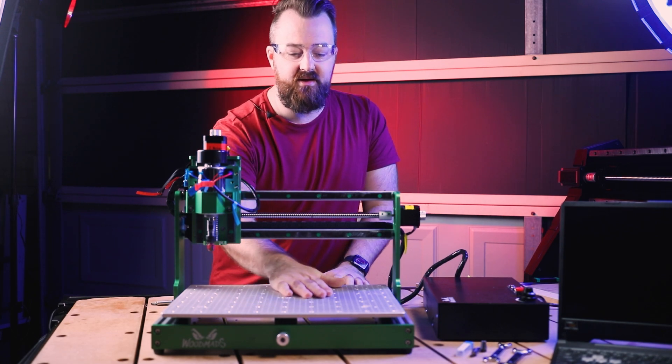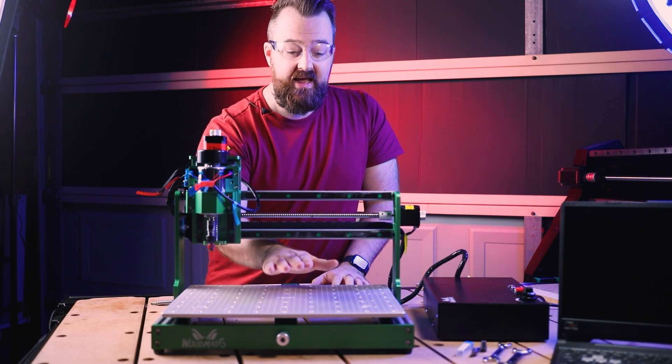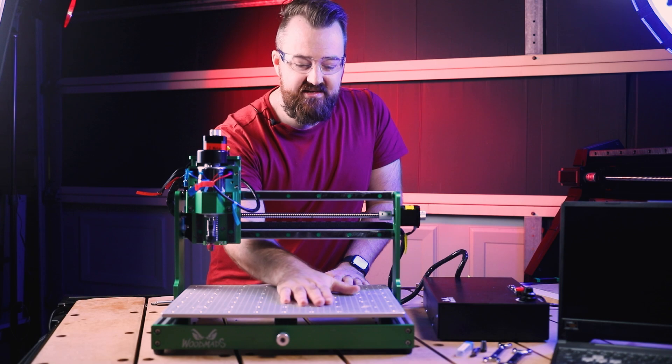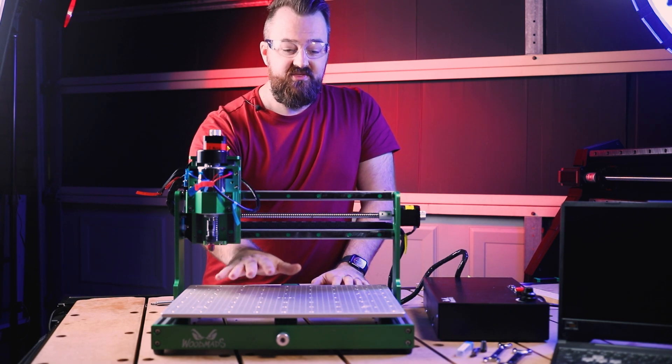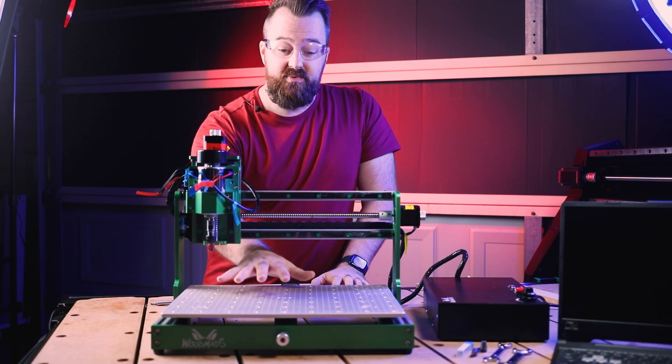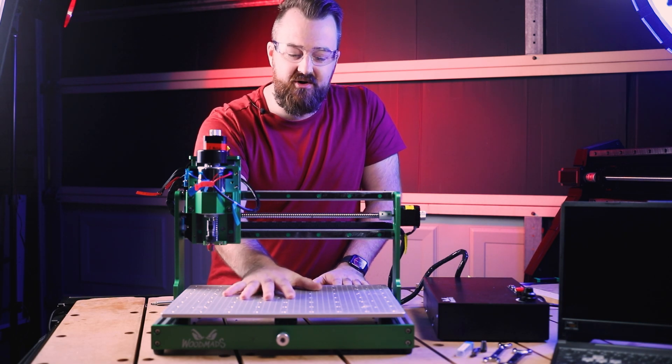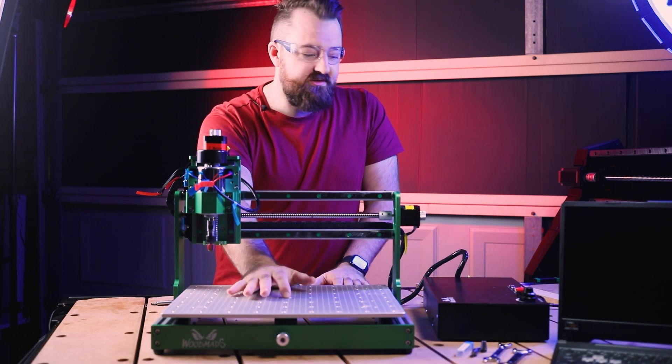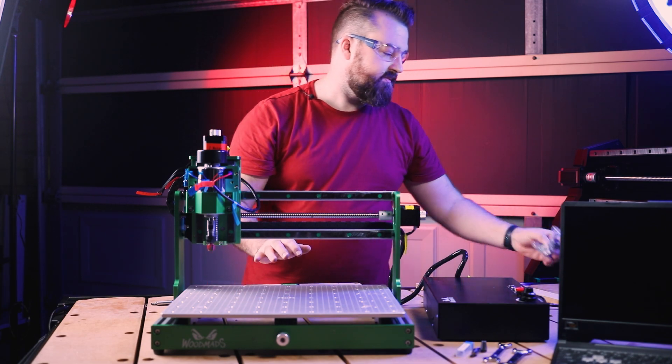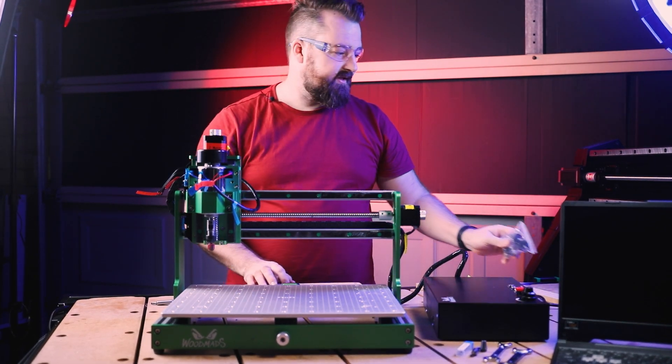Now, as you can see, this is a completely aluminium bed and there are M6 threads into this aluminium bed. That is really great because it keeps it nice and flat. Also allows you to hold down your stock really easily using those inserts. And it also comes with some really cool little hold down clamps as well.